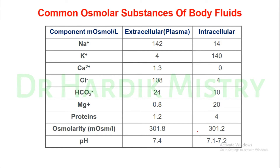The common osmolar substances of the body: in the extracellular compartment, sodium is 142 milliosmol per liter and chloride is 108 milliosmol per liter. In the intracellular fluid, potassium is around 140 milliosmol per liter, which is the highest ion present in the intracellular fluid compartment.